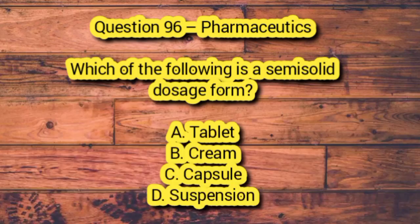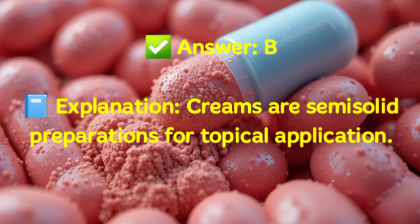Question 96 – Pharmaceutics. Which of the following is a semisolid dosage form? A. Tablet. B. Cream. C. Capsule. D. Suspension. Answer: B. Explanation: Creams are semisolid preparations for topical application.